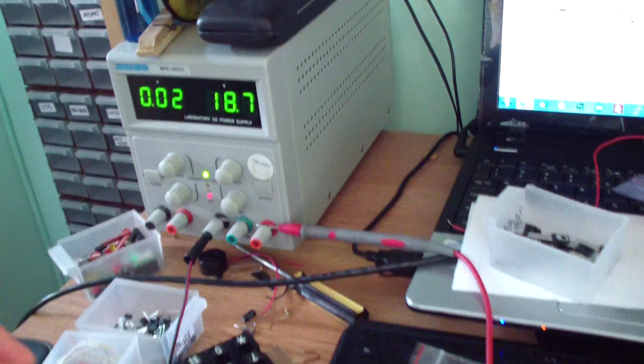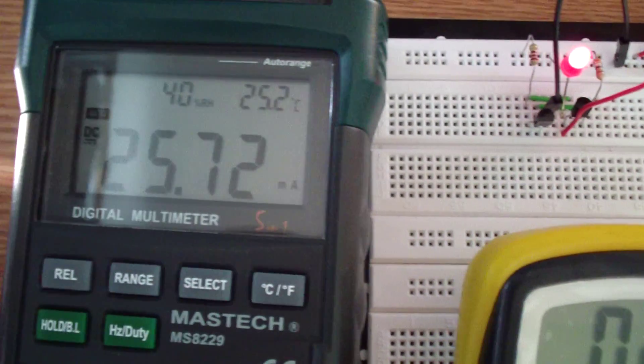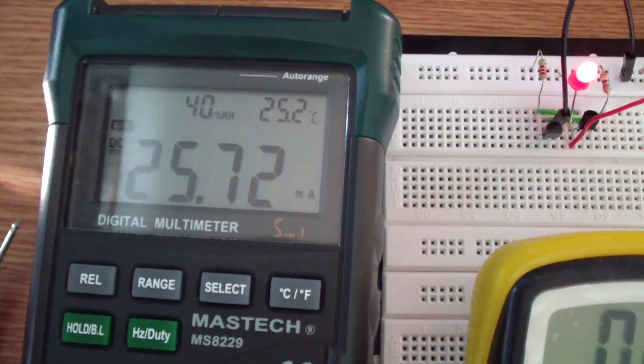At 18 volts, the voltage on the LED is 2.1 volts and the current consumption is 25 milliamps.